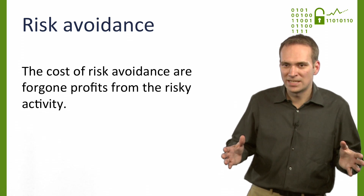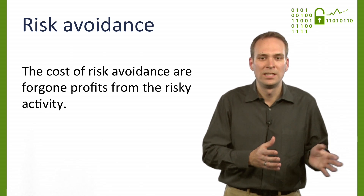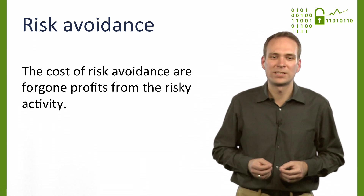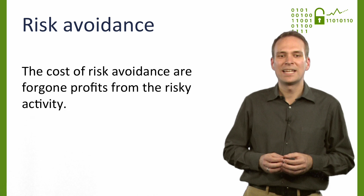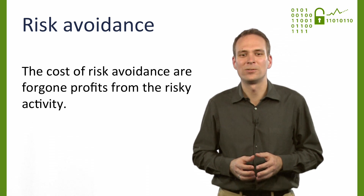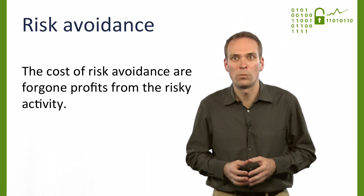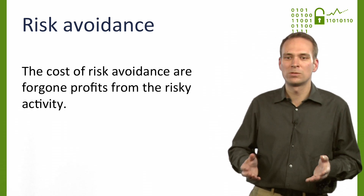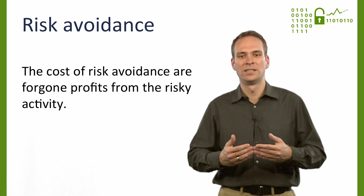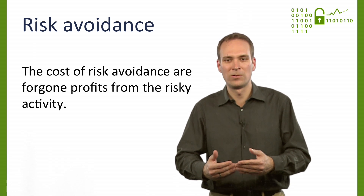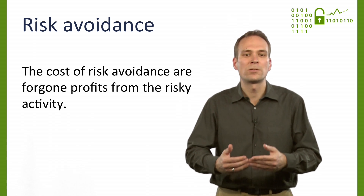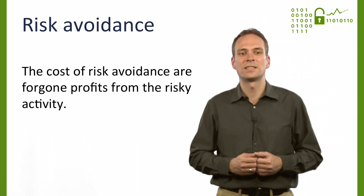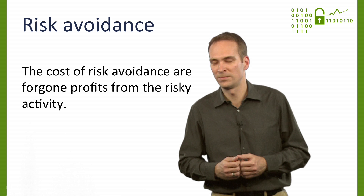If our imaginary multinational brand can neither accept nor sufficiently reduce a specific risk — say, for lack of effective protection technology — it may take a more radical approach and avoid the risk altogether. Risk avoidance, the third canonical instrument, always implies that the organization withdraws from a risky business. For example, it could limit daily transaction amounts in the online channel or stop doing business with or in a country. The cost of risk avoidance is equal to the forgone profits from the risky business.